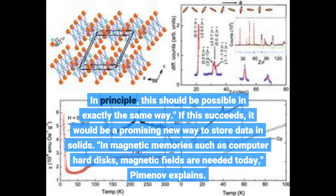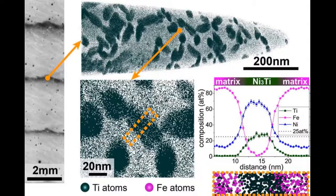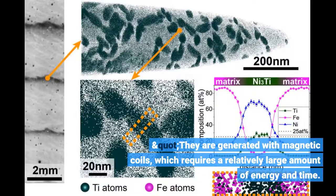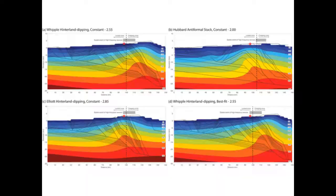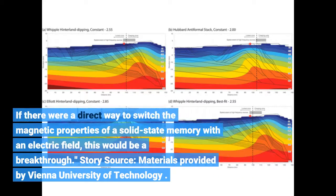In magnetic memories such as computer hard disks, magnetic fields are needed today, Piminov explains. They are generated with magnetic coils, which requires a relatively large amount of energy and time. If there were a direct way to switch the magnetic properties of a solid state memory with an electric field, this would be a breakthrough.